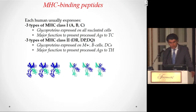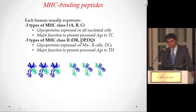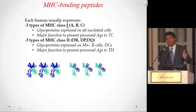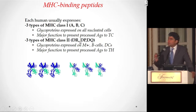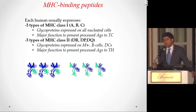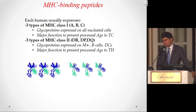We have two classes of HLA molecules: class 1 and class 2. Class 1 has subtypes A, B, C; class 2 has subtypes DR, DP, DQ. Class 1 is present on all nucleated cells and presents antigens only to CD8 T cells. CD8 T cells have the machinery to kill — when stimulated, they kill the cell harboring the infection.